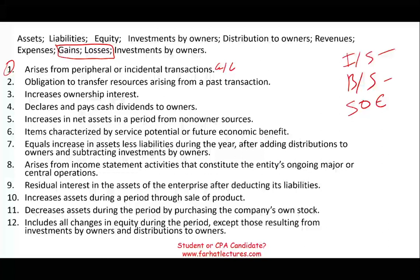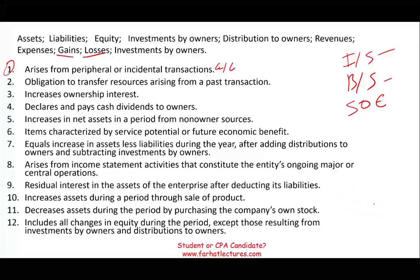Think about a company like McDonald's. Their revenue is selling burgers and food. But every once in a while, McDonald's might sell a warehouse and incur a loss, or sell it for more than their basis and incur a gain. They might also buy Apple stock, it goes up, and they sell it — that's a gain, not revenue, because that's not what they do. Gains are like revenues — they increase on the credit — and losses are like expenses, they increase on the debit. Both are income statement accounts.